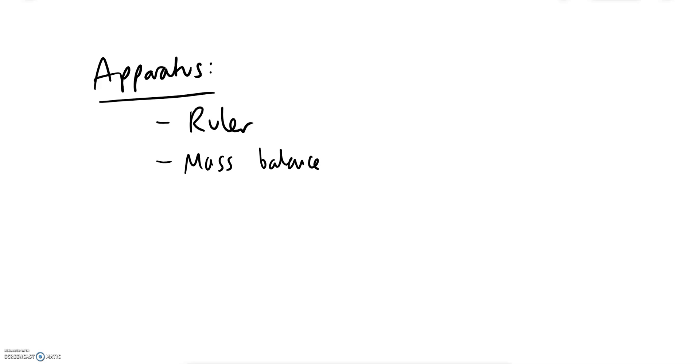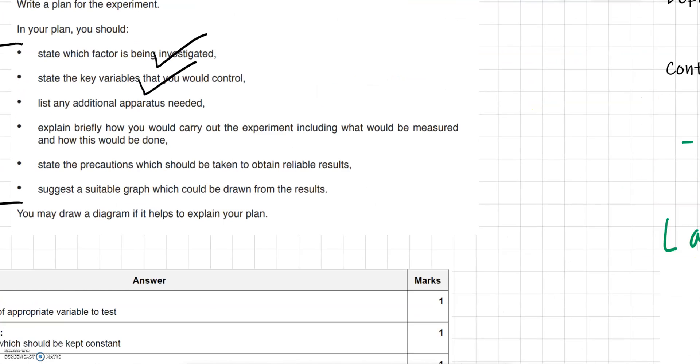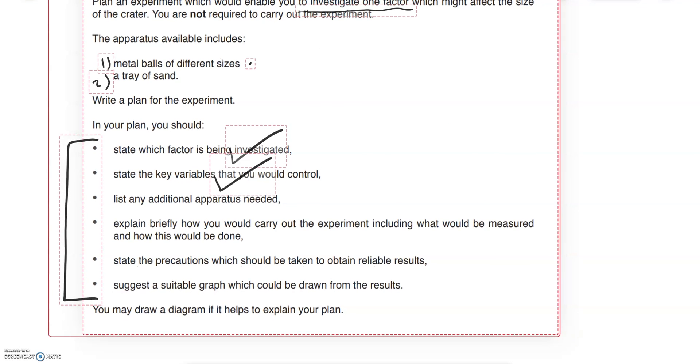And also some mass balance or scales that we can get the mass of the ball. We might also need a smaller ruler or another ruler to measure the diameter of the hole, so for the diameter of the hole but also for the drop height you need two rulers. That would be the key additional apparatus needed.